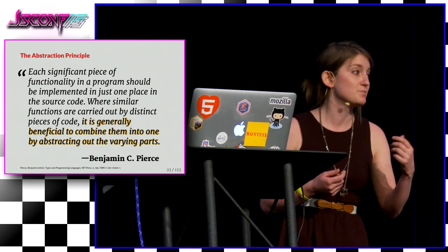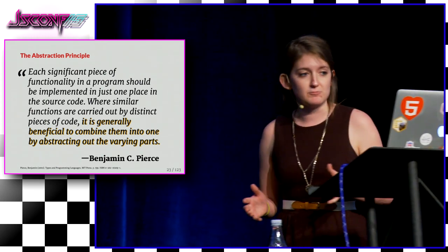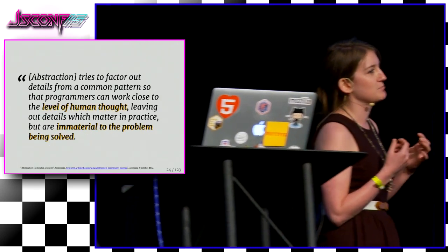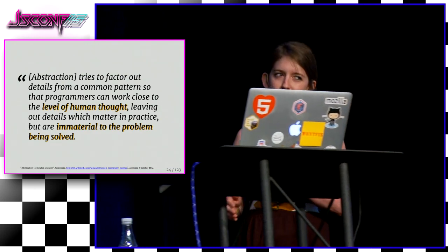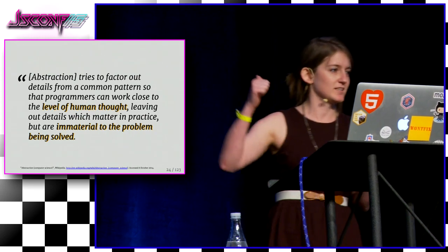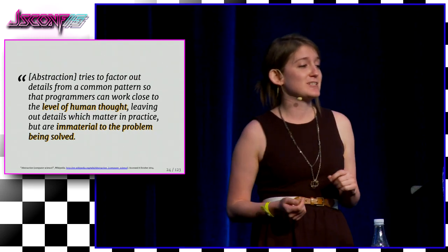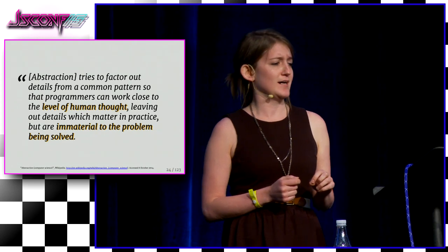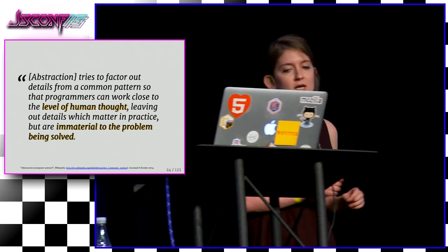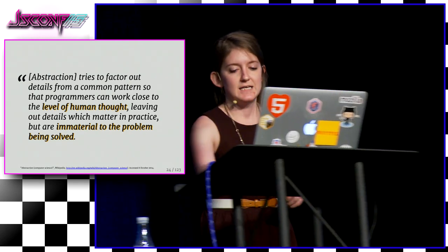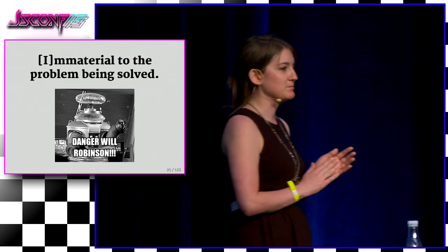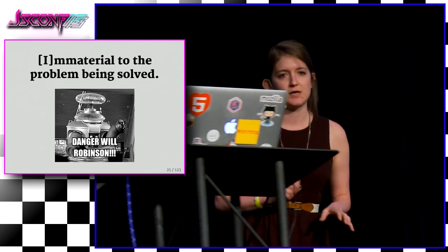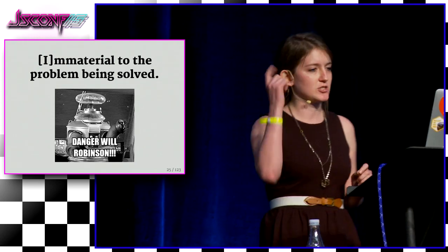This is probably something we all do in our daily lives — potentially one of the things we find most satisfying when we program, when we can finally refactor something into one elegant function. But I want us to understand abstraction on a theoretical level. From Wikipedia: abstraction tries to factor out details from a common pattern so that programs can work close to the level of human thought, leaving out details which matter in practice but are immaterial to the problem being solved. As programmers, one of the big things we also do is define the problem we're solving.